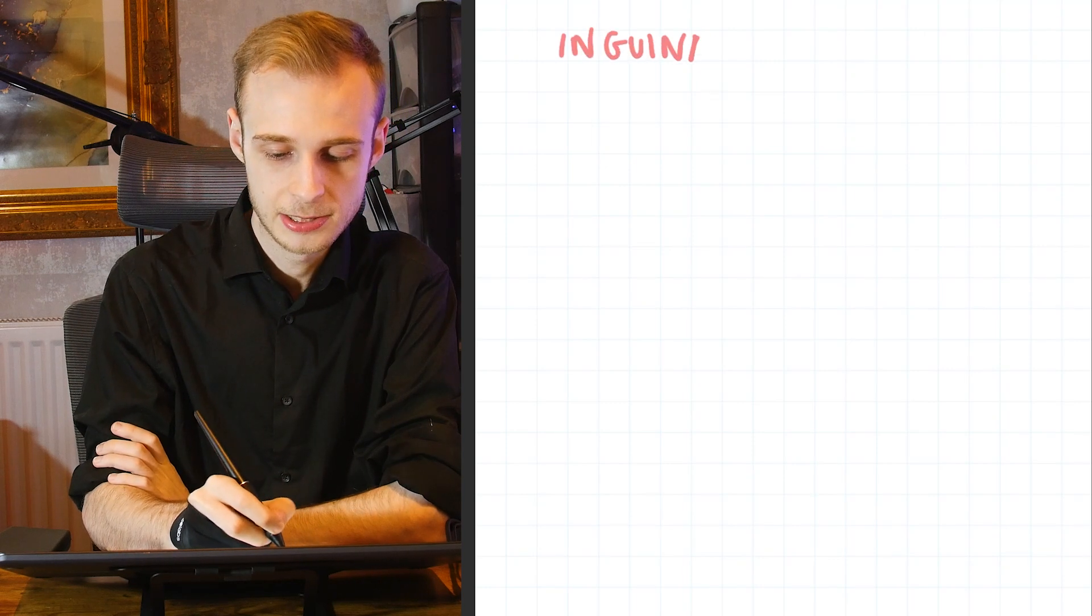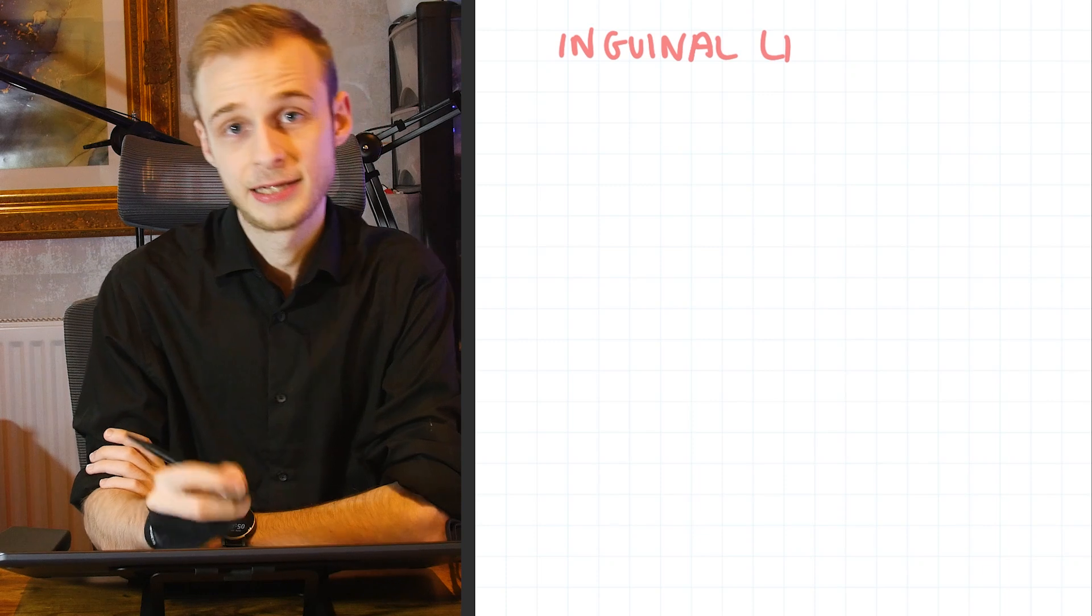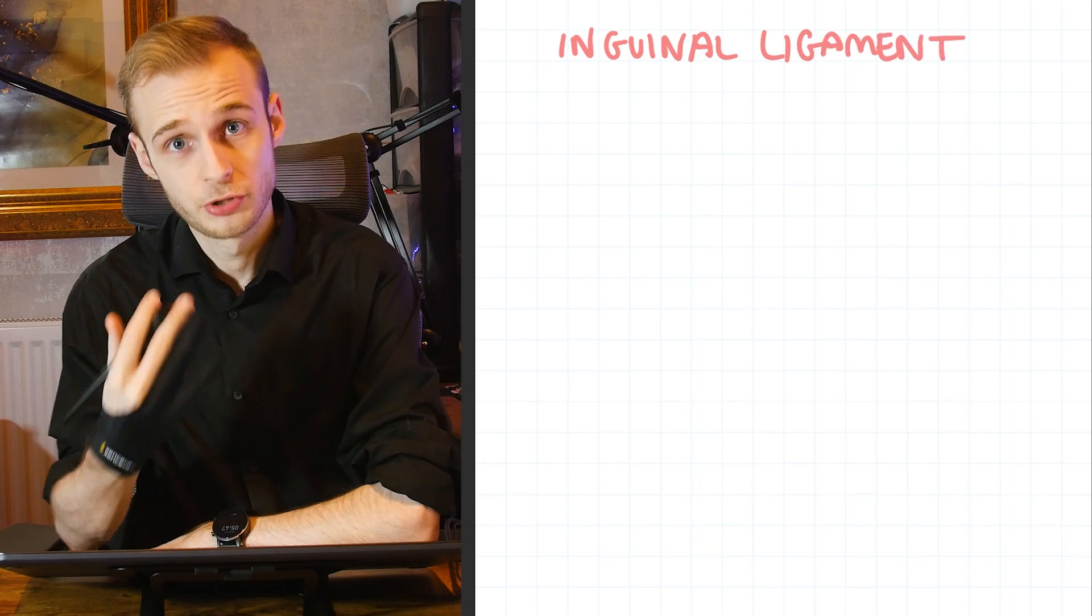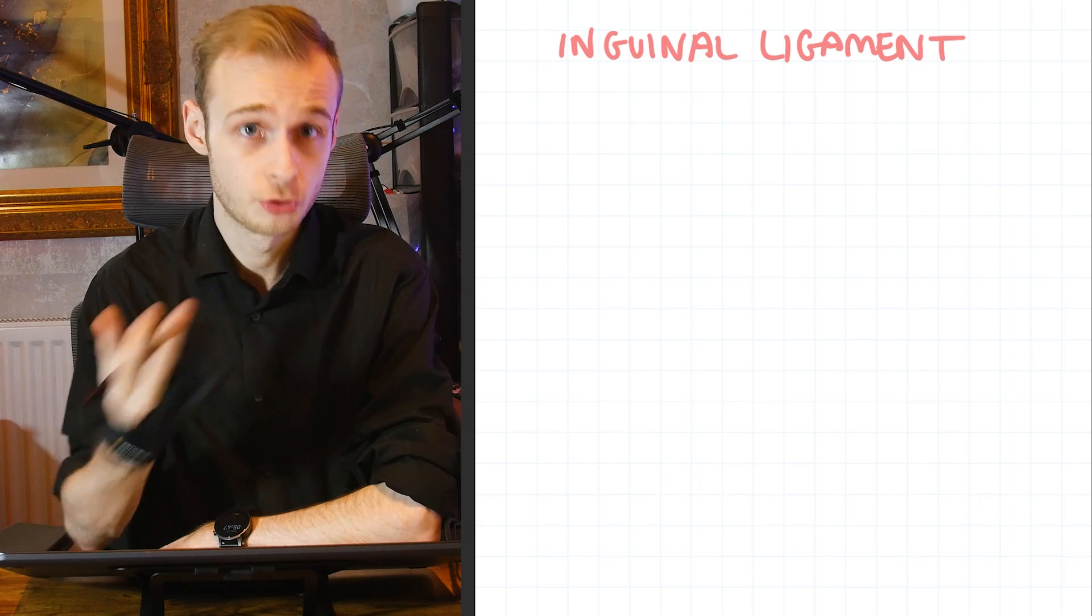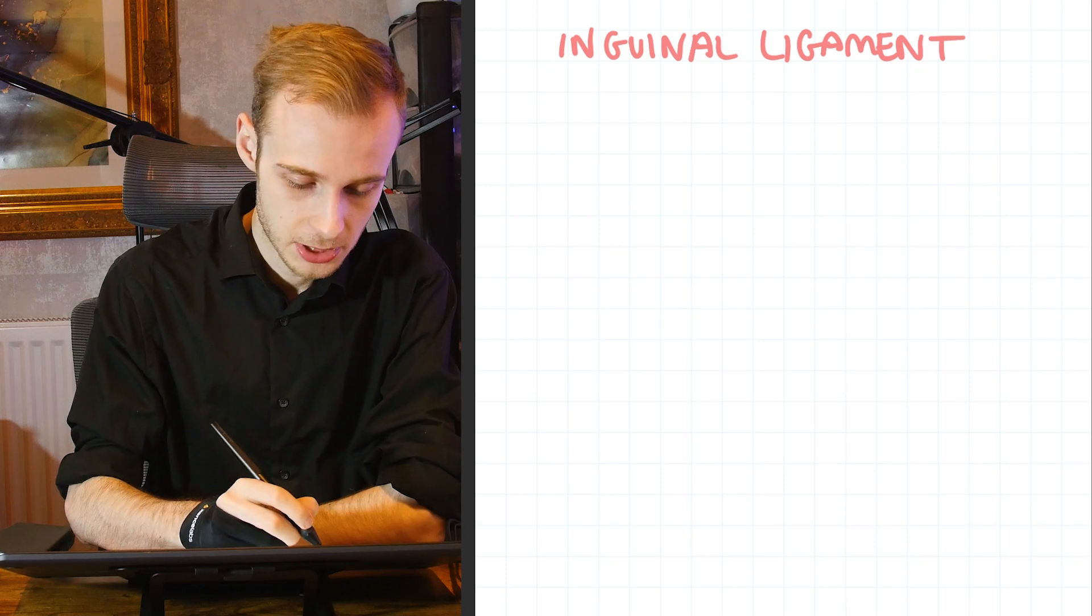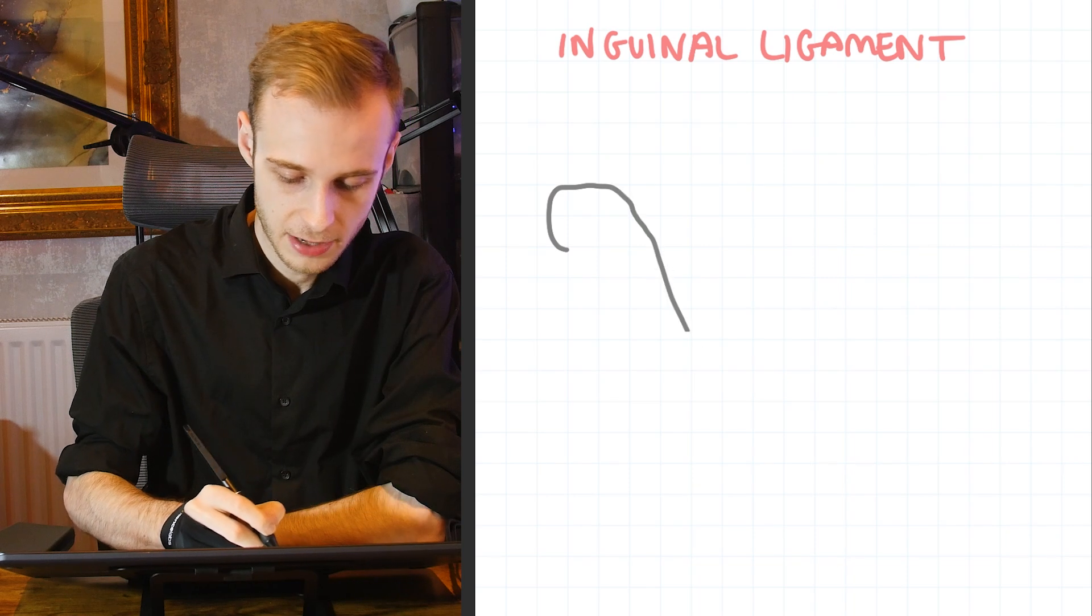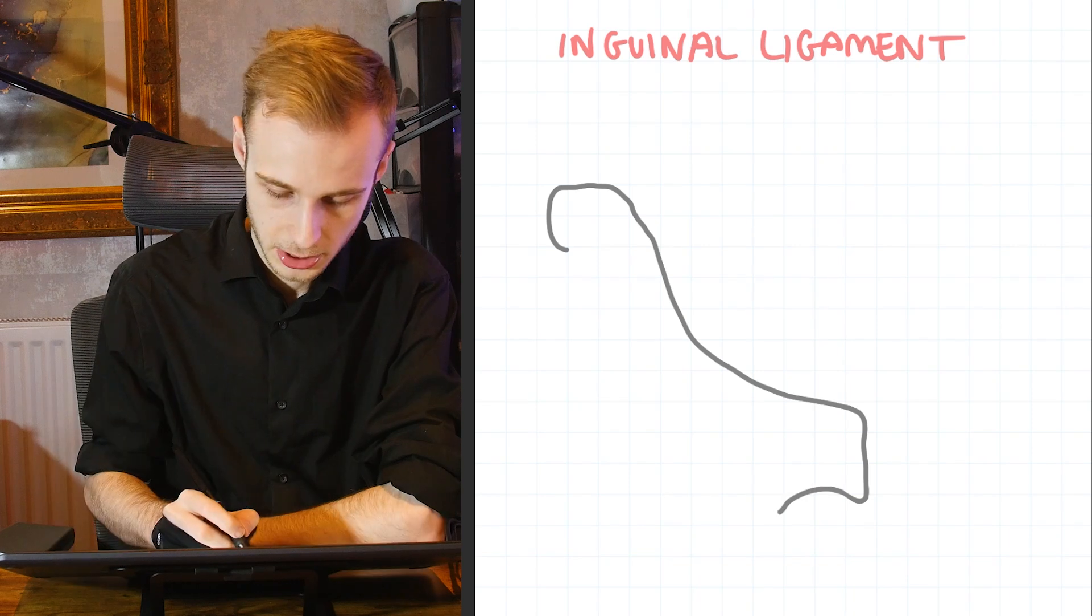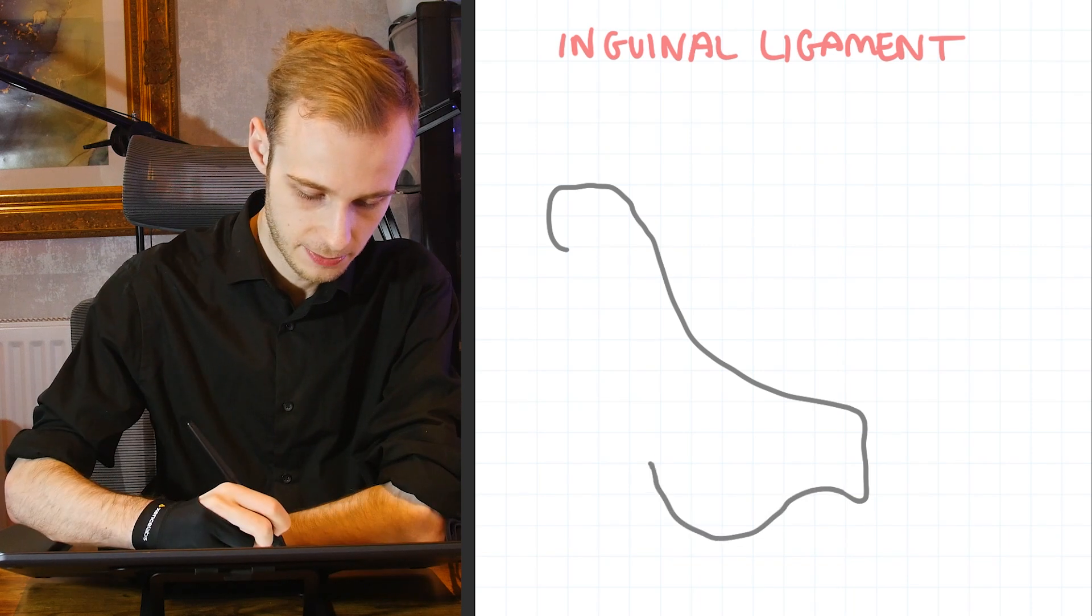Let's get started. Today we're going to be talking about two things: the inguinal ligament and Hesselbach's or the inguinal triangle. Please join along with me as we go, we are going to be drawing together. We're going to start just by doing a very crude outline of a pelvis.